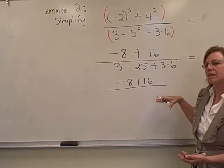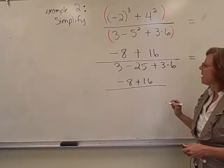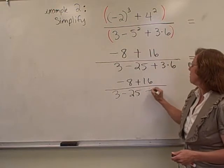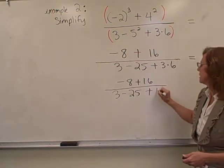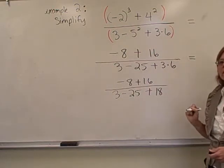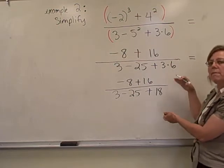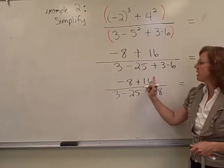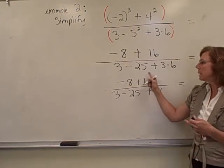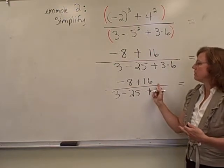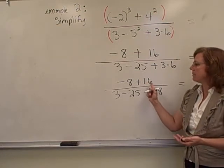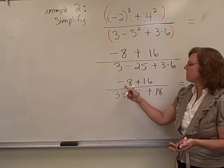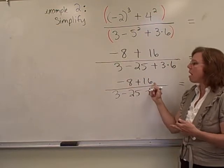So notice that I've recopied the rest, even though I didn't really do anything. I want to show my work logically in a nice order, so everyone can read it. So I have in my denominator, 3 minus 25 plus the 3 times 6, 18. So I'm still continuing to simplify my numerator and my denominator, and so now I have additions and subtractions there. So negative 8 plus 16.